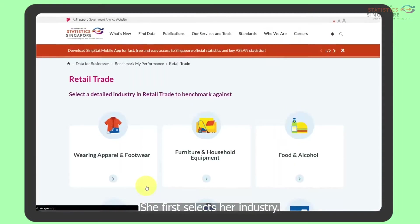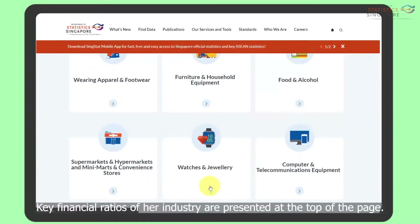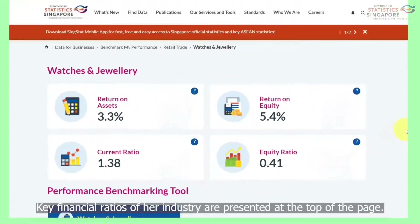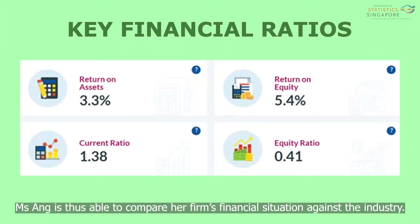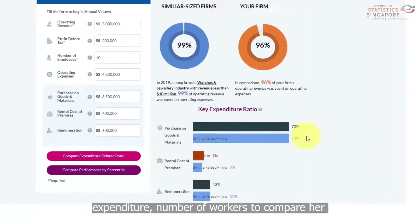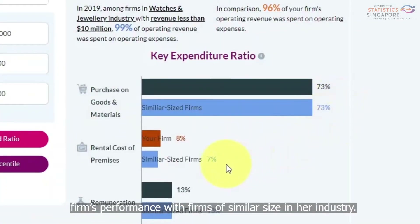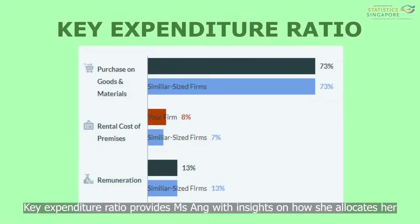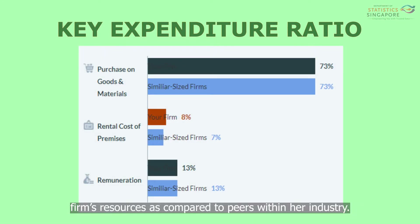She first selects her industry. Key financial ratios of her industry are presented at the top of the page, allowing Ms Ng to compare her firm's financial situation against the industry. The Benchmarking tool also allows Ms Ng to enter her firm's data such as revenue, expenditure, and number of workers to compare her firm's performance with firms of similar size in her industry. Key expenditure ratios provide Ms Ng with insights on how she allocates her firm's resources as compared to peers within her industry.